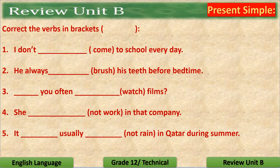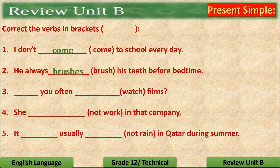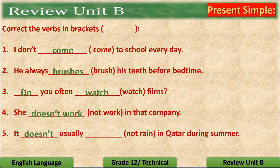Dear students, please now check your understanding of this part of the lesson about the present simple by correcting the verb or verbs in brackets. Pause the video and come back to check your answers. Number one: I don't come to school every day. Number two: He always brushes his teeth before bedtime. Number three: Do you often watch films? Number four: She doesn't work in that company. Number five: It doesn't usually rain in Qatar during summer.